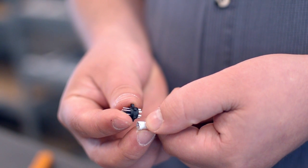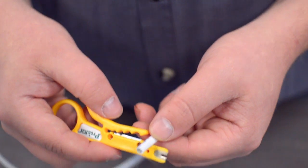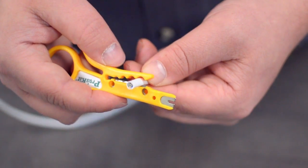Measure how far you will need to strip back the jacket by holding the cable up against the base of the connector. Then, strip the cable jacket using the wire strippers.